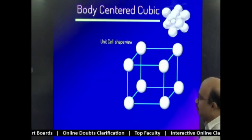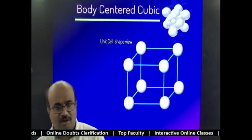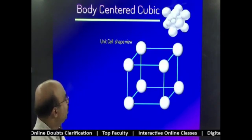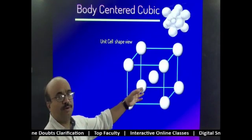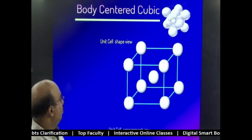There will be eight corner atoms - other than that we can't form a cube. So corners must be there always in any unit cells, any type of unit cells. But there will be an atom at the center of the body of the unit cell.